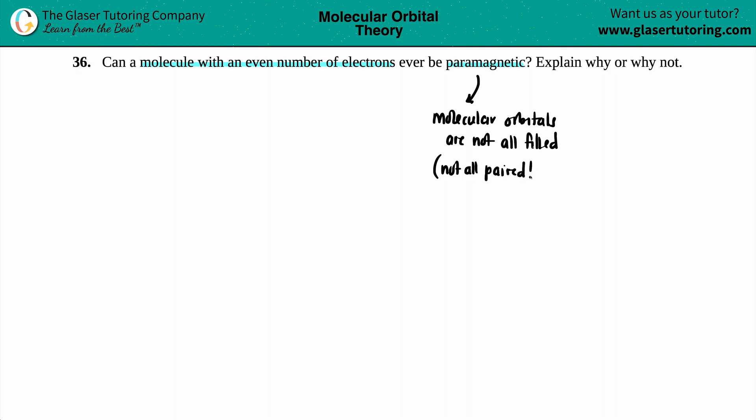And another way to say that something is not all filled is that they are not all paired. So there are basically paramagnetic and diamagnetic that has to do with electron configuration, which you might have seen earlier in your class.